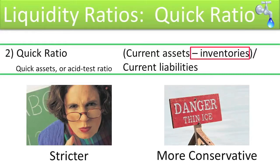The Quick Ratio is computed as follows: Current Assets less Inventories, divided by Current Liabilities.